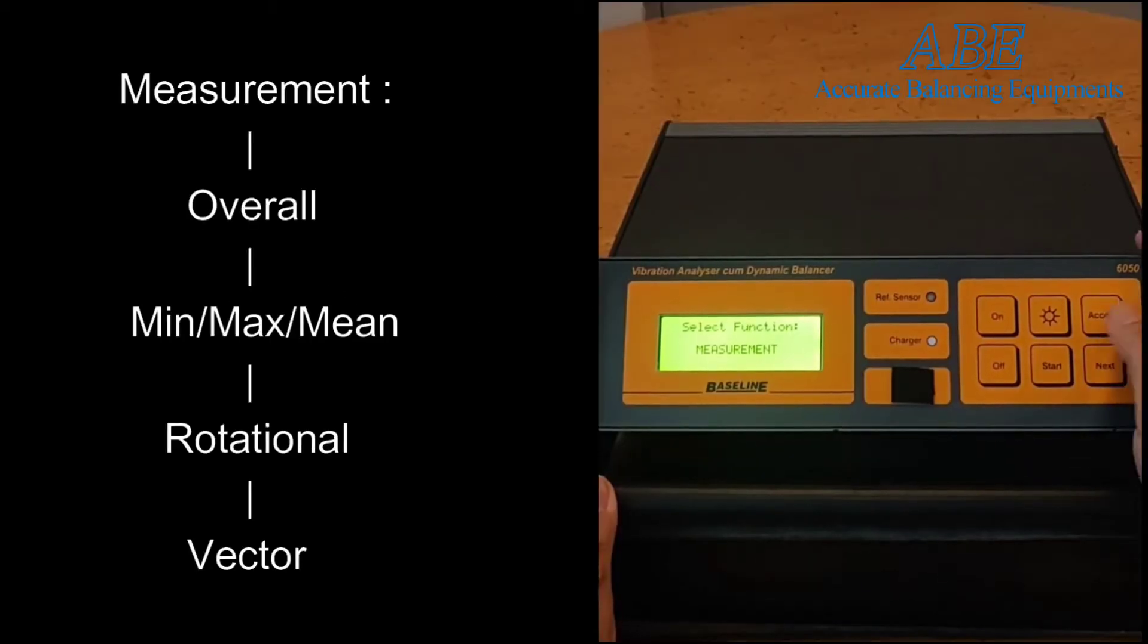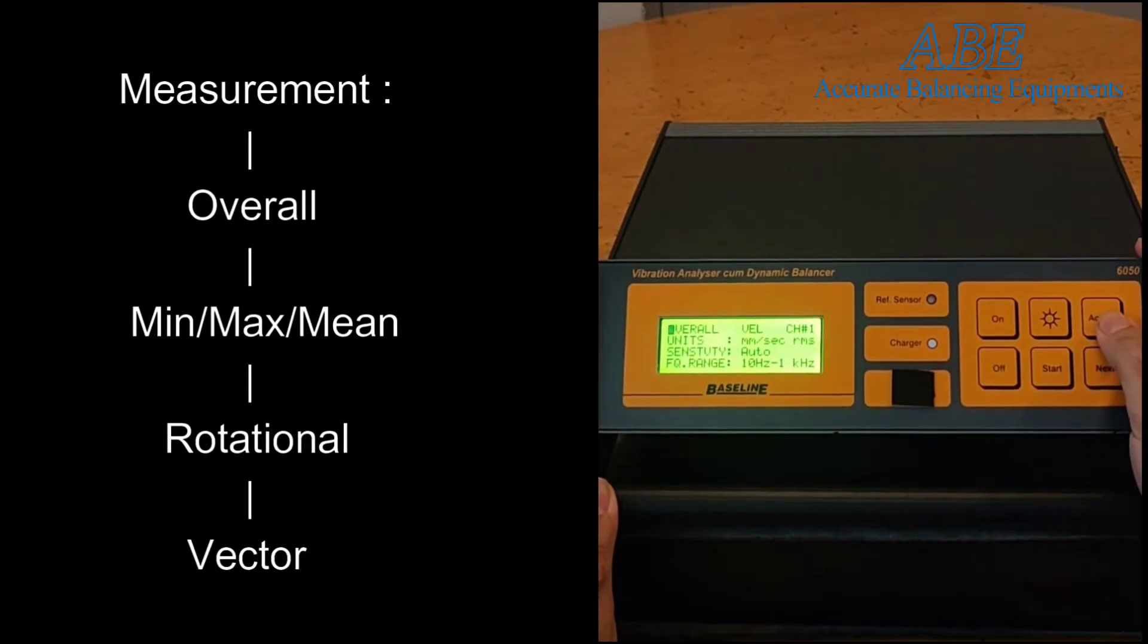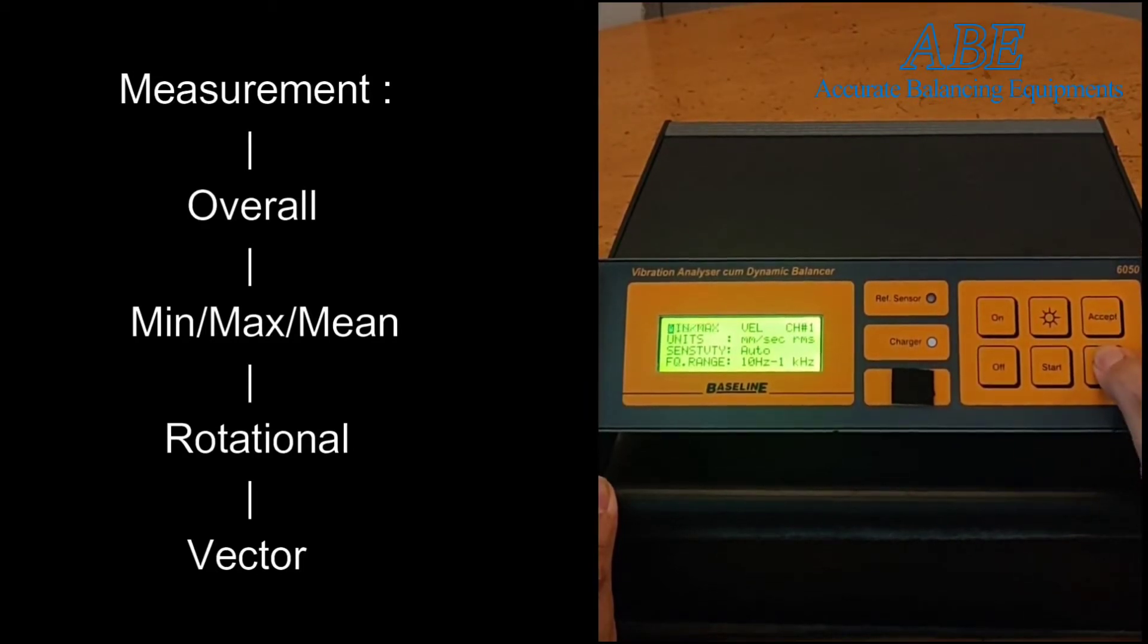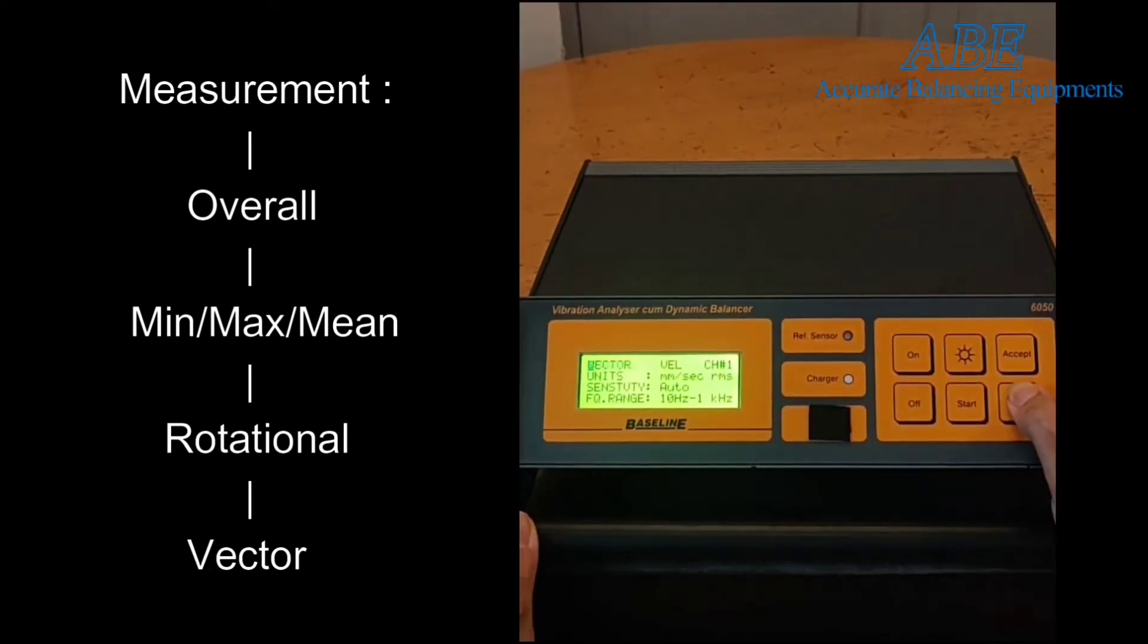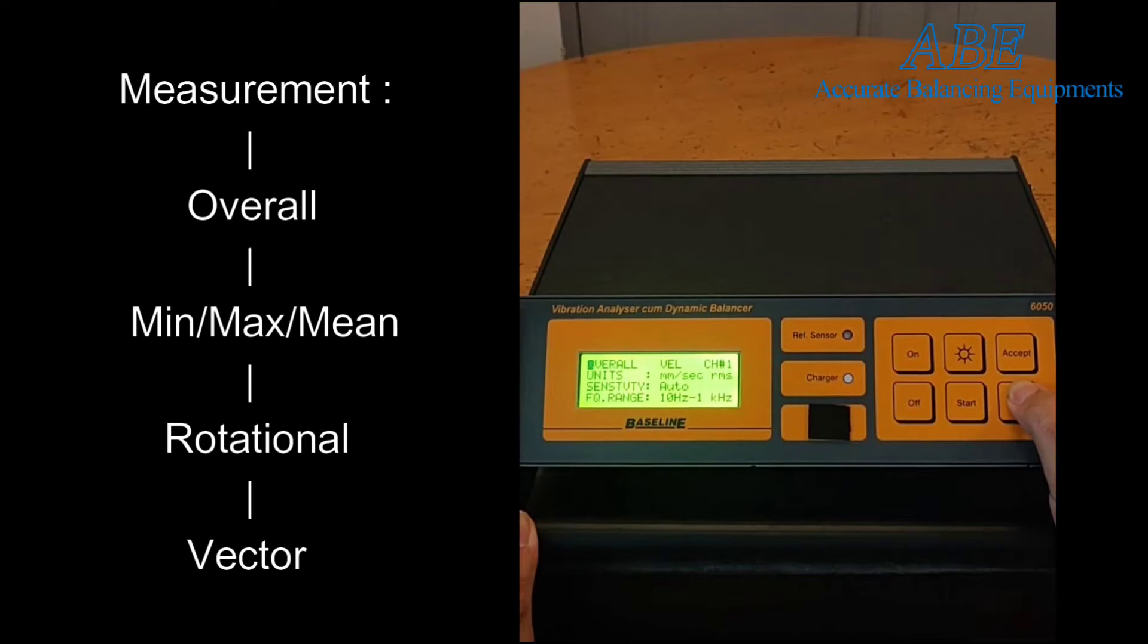Accept measurement and you get the following options: Overall measures the vibration of all frequencies together. Press next for min/max, which indicates the minimum, maximum, and mean of 20 successive readings. Press next for rotational, which indicates the rotational elements of vibration.